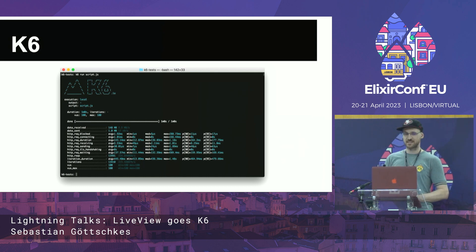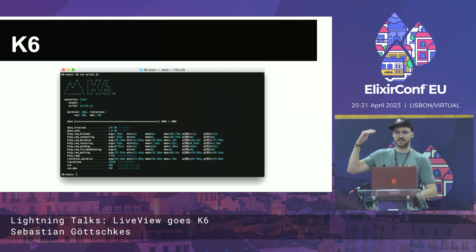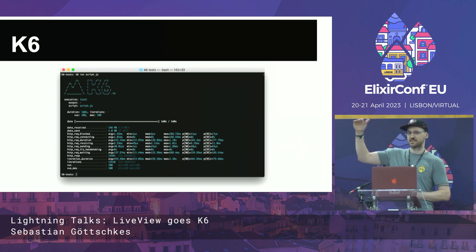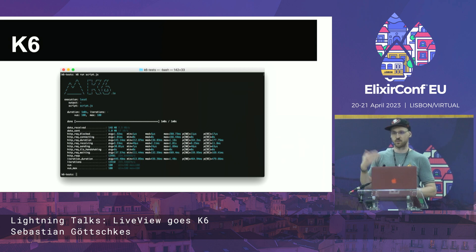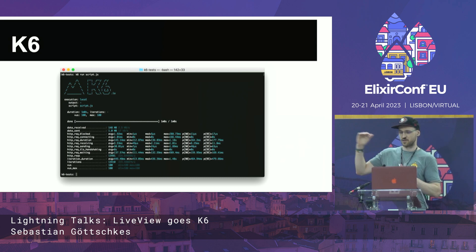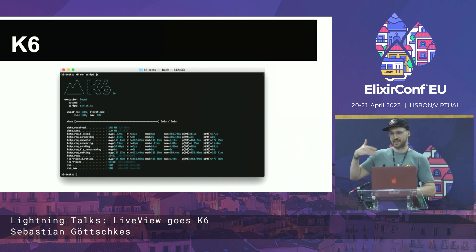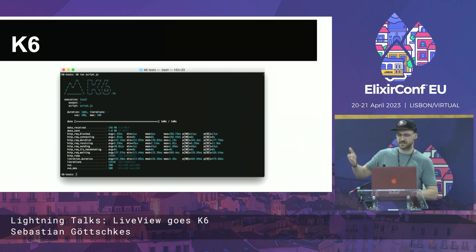You can specify specific timeouts, and you can increase and decrease the users over time. For example, you can have a spin-up period where the users increment, then stay very high, then drop again. In addition to just testing 100 users for a short period, you can also run this concurrently over 30 minutes to see if you have memory leaks or other issues that only appear under sustained high load.